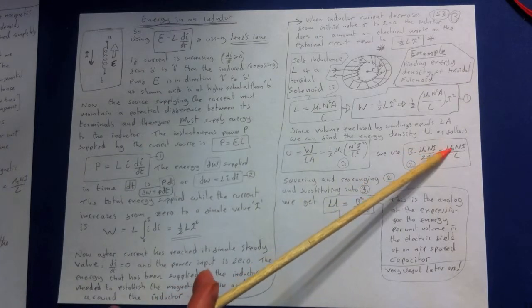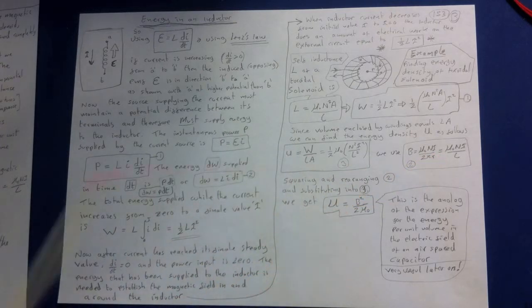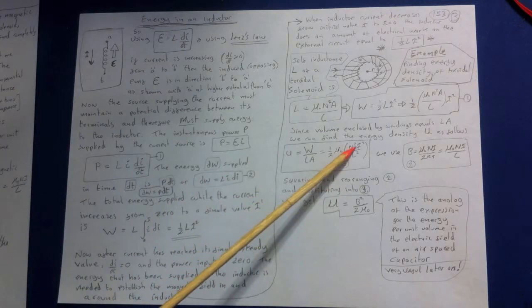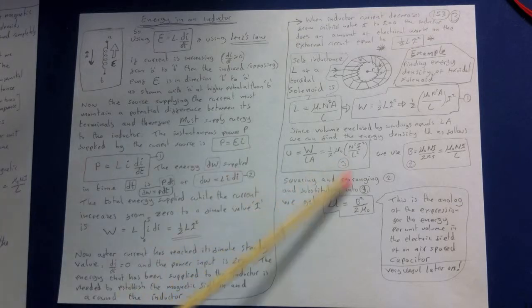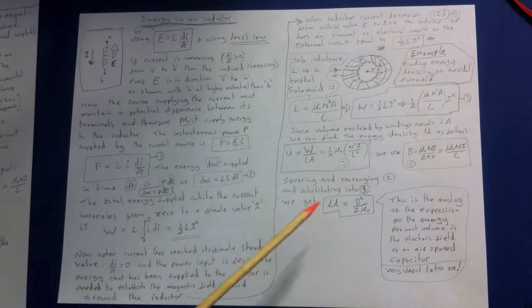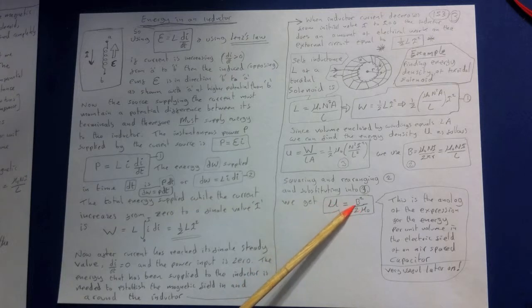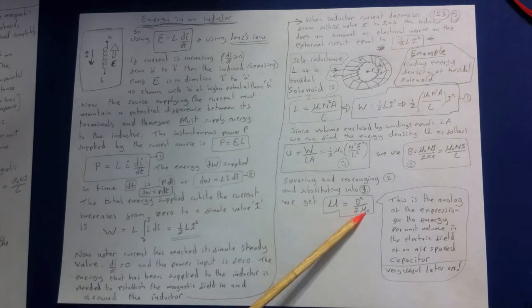B equals mu naught NI over L. Squaring and rearranging that, we find N squared I squared over L squared. This equals B squared over mu naught squared. So we can just plug that straight in and substitute this back into 3 then. We get the useful result that the energy density or in other words the energy per unit volume in an inductor is given by B squared. Now that applies to any inductor actually. It's B squared over 2 mu naught.